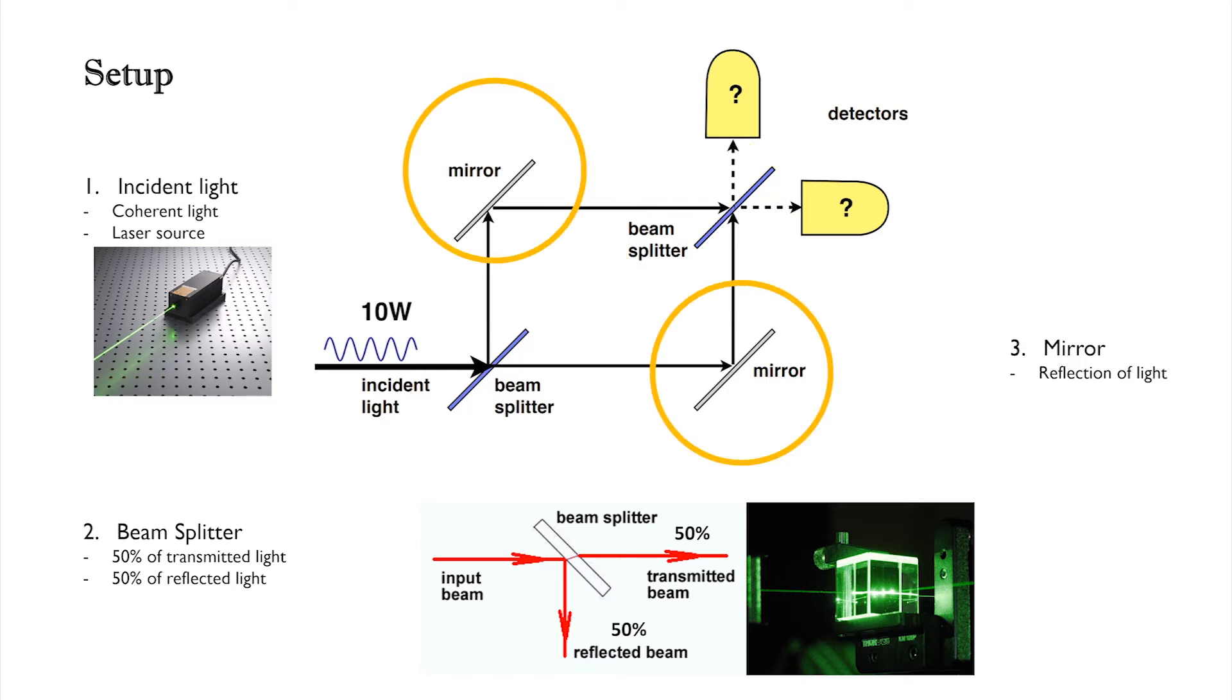Two silver mirrors that enable the maximum reflections of beams, and two photon detectors, like screens.